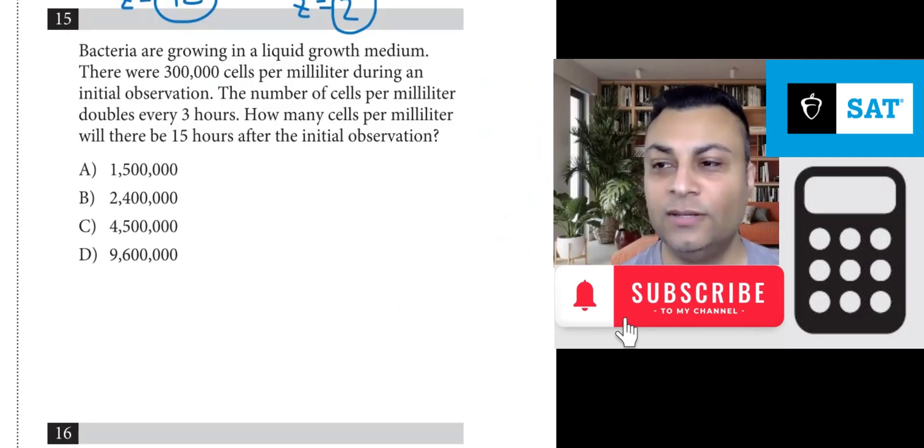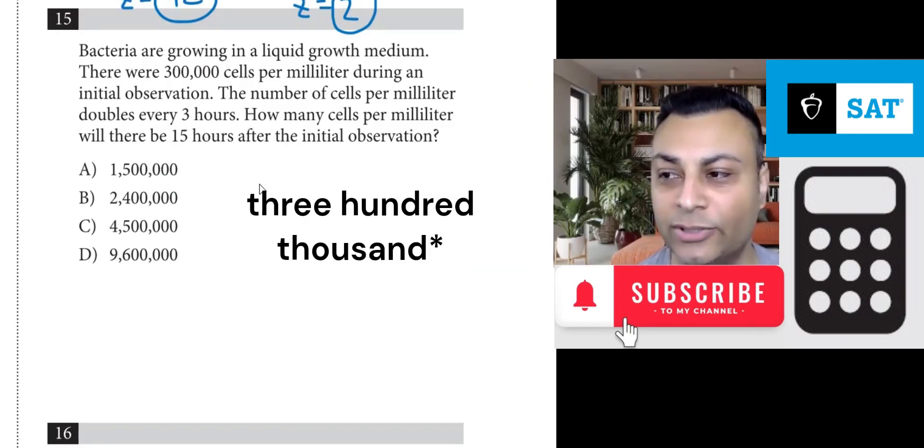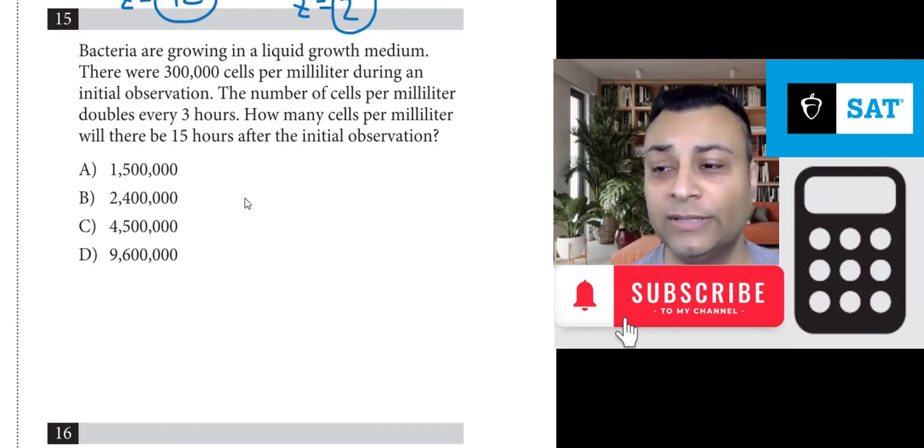Question 15. Bacteria are growing in a liquid growth medium. There were 300,000 cells per milliliter during an initial observation. The number of cells per milliliter doubles every three hours.